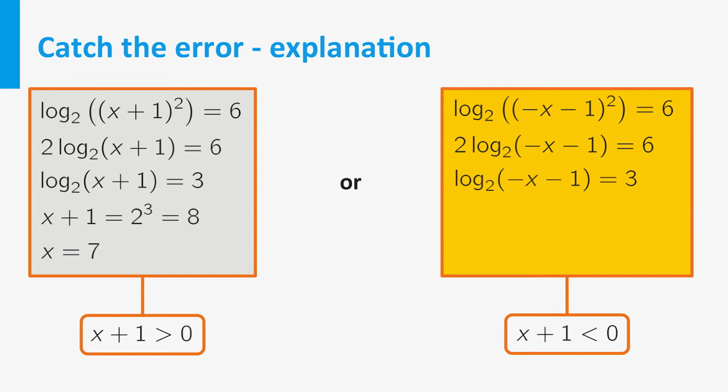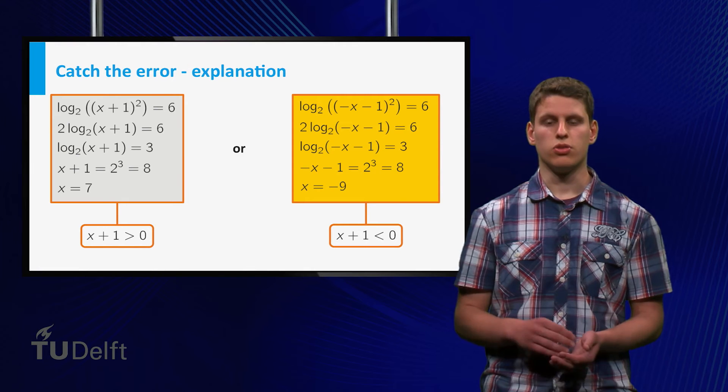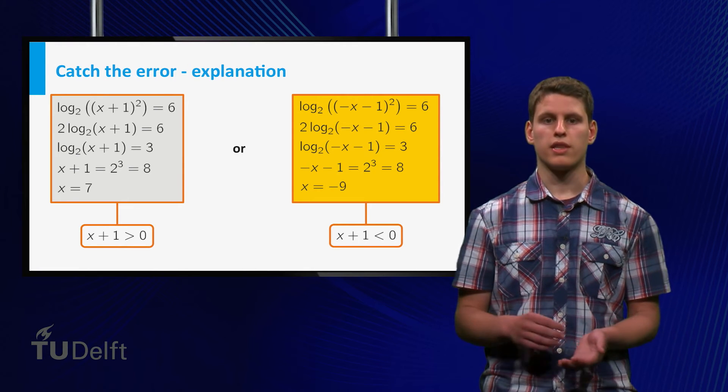(x+1)² is equal to (−x−1)². And if x+1 is negative, then −x−1 is positive. So in this case we can still take the exponent 2 out of the logarithm. And this leads to the second solution, x equals minus 9.